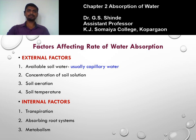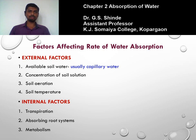The first external factor is available soil water. A sufficient amount of water should be available to the plant. Capillary water is readily available for absorption. There are three types of water in the soil: hygroscopic water, capillary water, and gravitational water. With little rainfall, hygroscopic water appears — water molecules tightly held on the surface of soil particles with a strong force of attraction, so this water is not available to the plant for absorption.